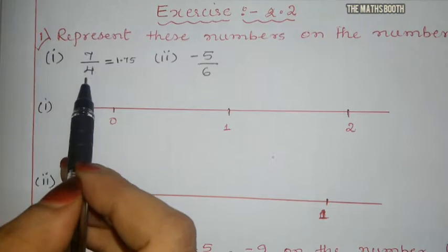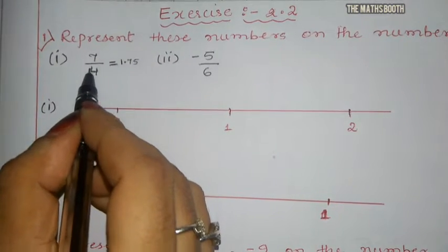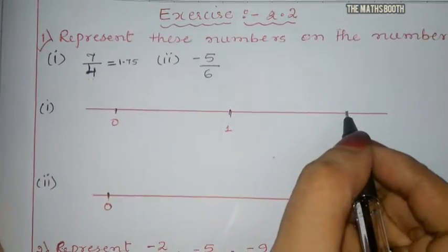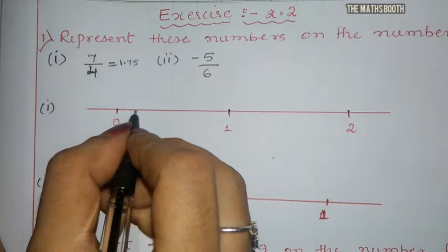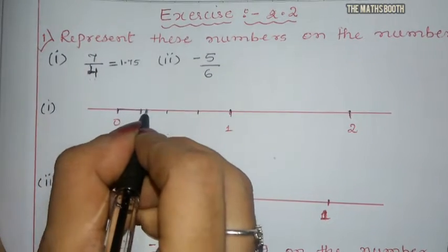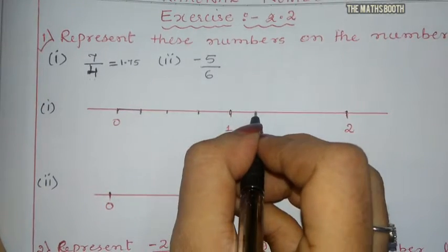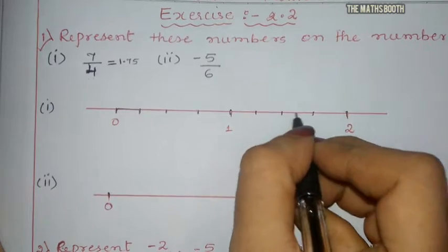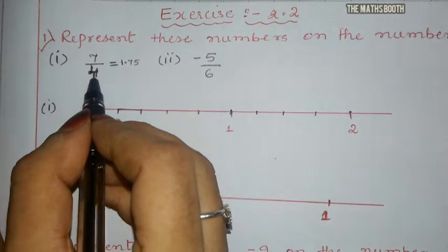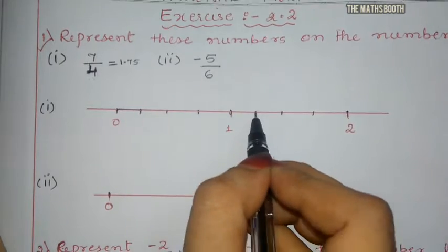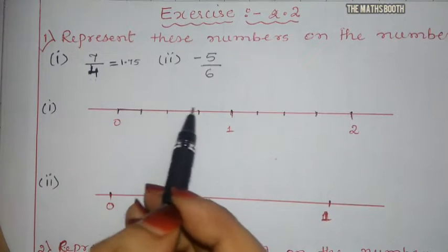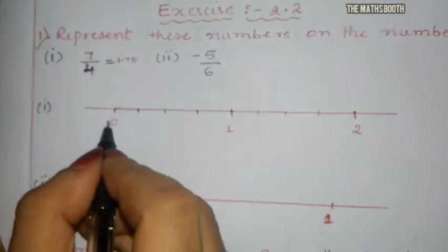For 7 by 4, the denominator is 4. We should divide 0 to 1 and 1 to 2 into 4 equal parts. To divide into 4 equal parts we need to put 3 dots — one less than the denominator. So we put 3 dots between 0 and 1, and 3 dots between 1 and 2, creating 4 equal parts in each interval. Now we know this is 0.